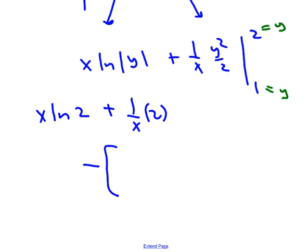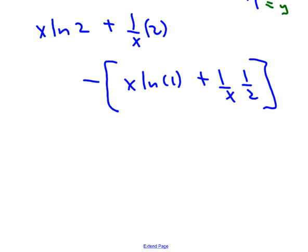Plug 1 in for y. We get x times ln of 1, and then plus 1 over x times 1 squared, which is 1 over 2, which could be 1 half. This is what we get. It's always worth simplifying a little bit. Something we may have forgotten. The element of 1 is 0, so that term goes away.